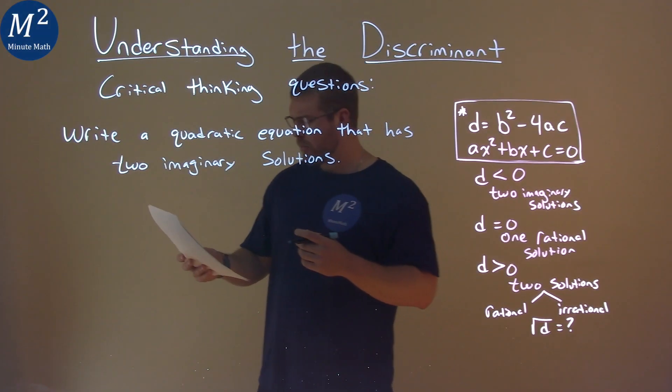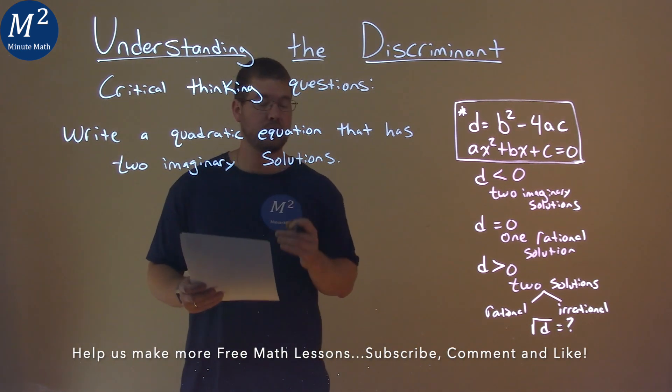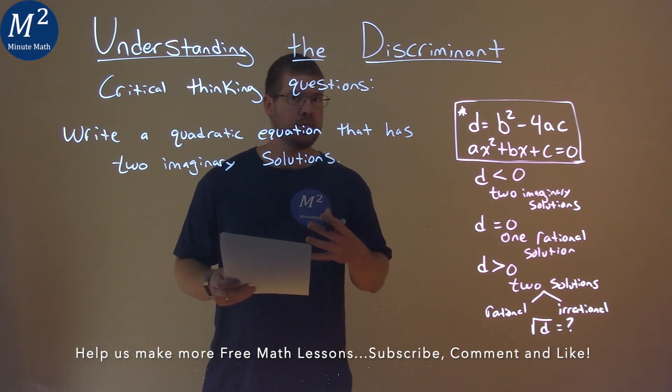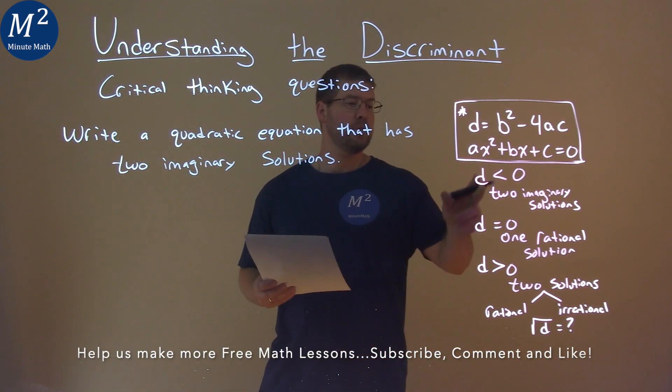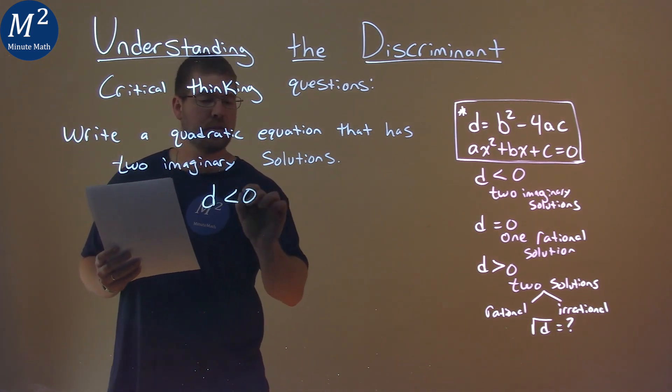We're given this problem right here. Write a quadratic equation that has two imaginary solutions. We first want to start backwards here. We know two imaginary solutions is when the discriminant is less than zero. So we want to find a discriminant that's less than zero.